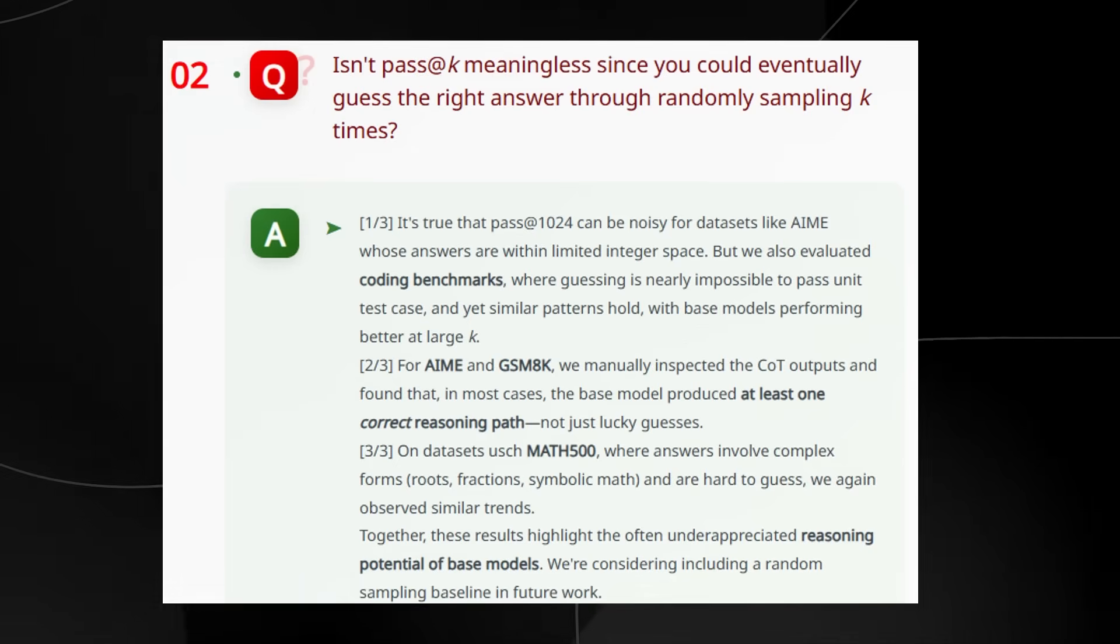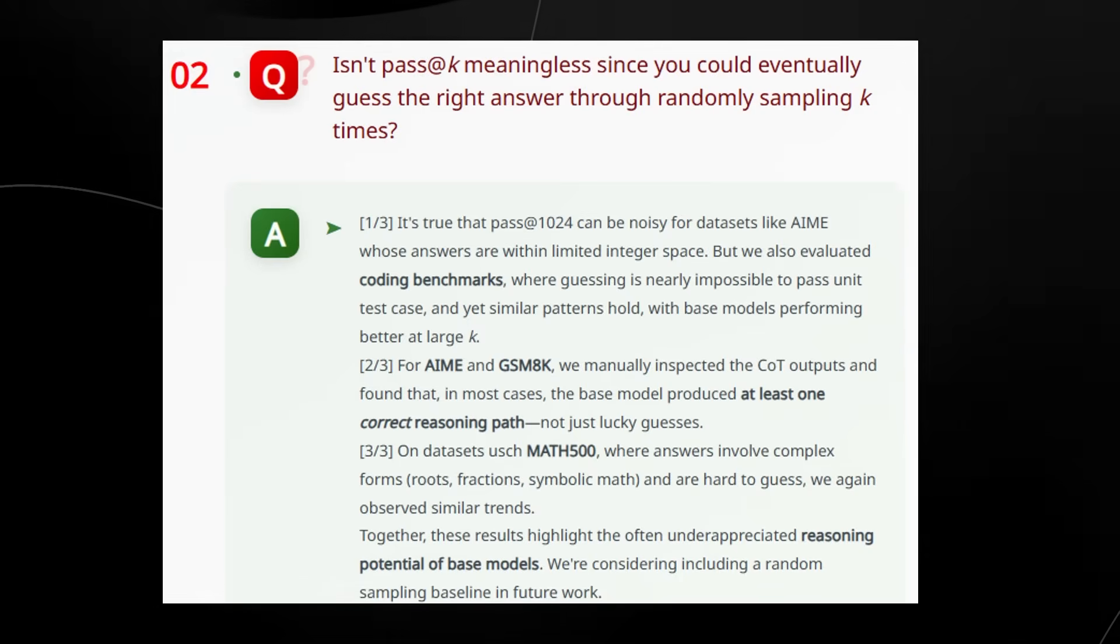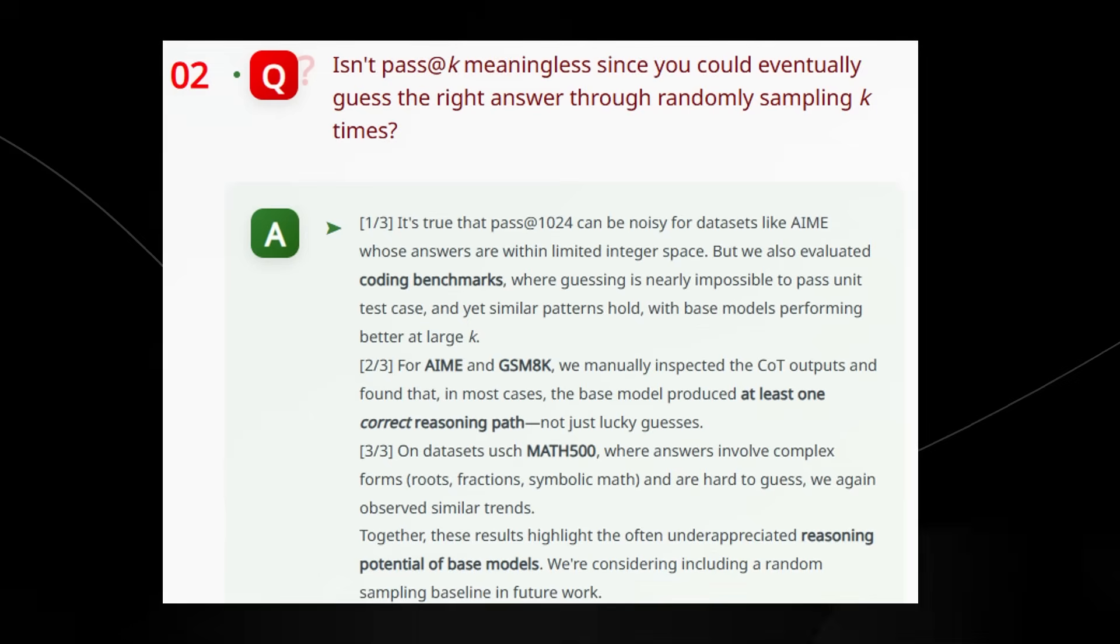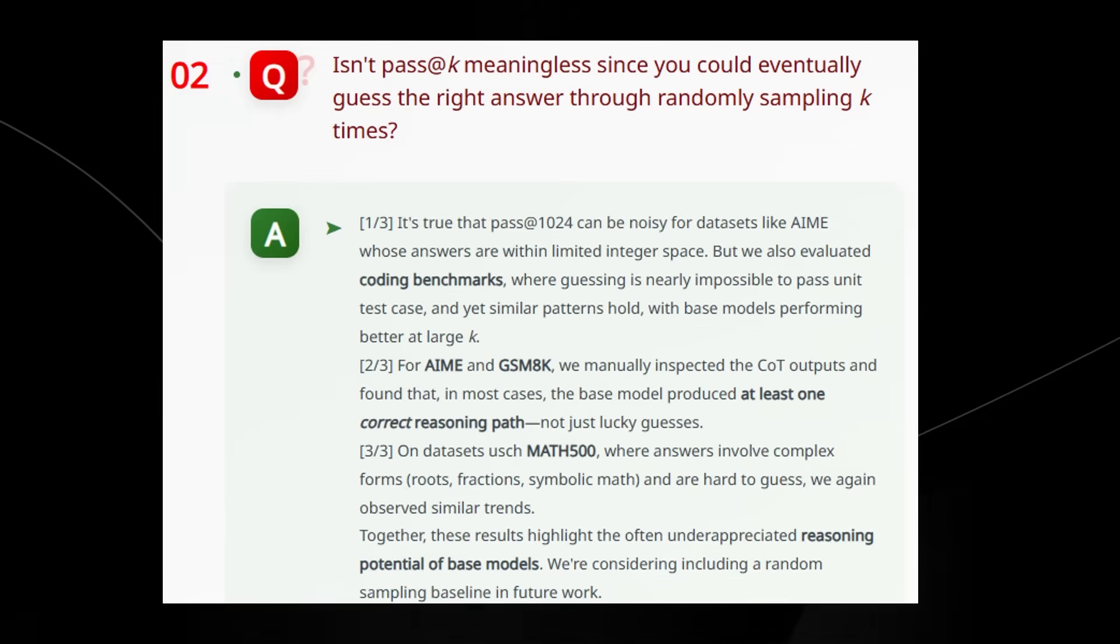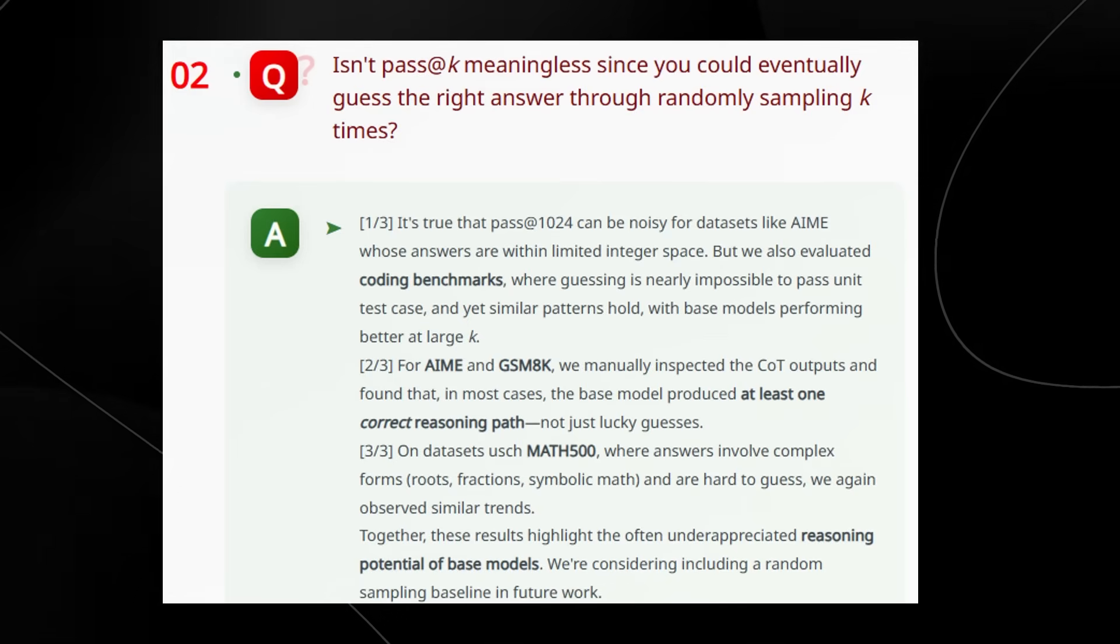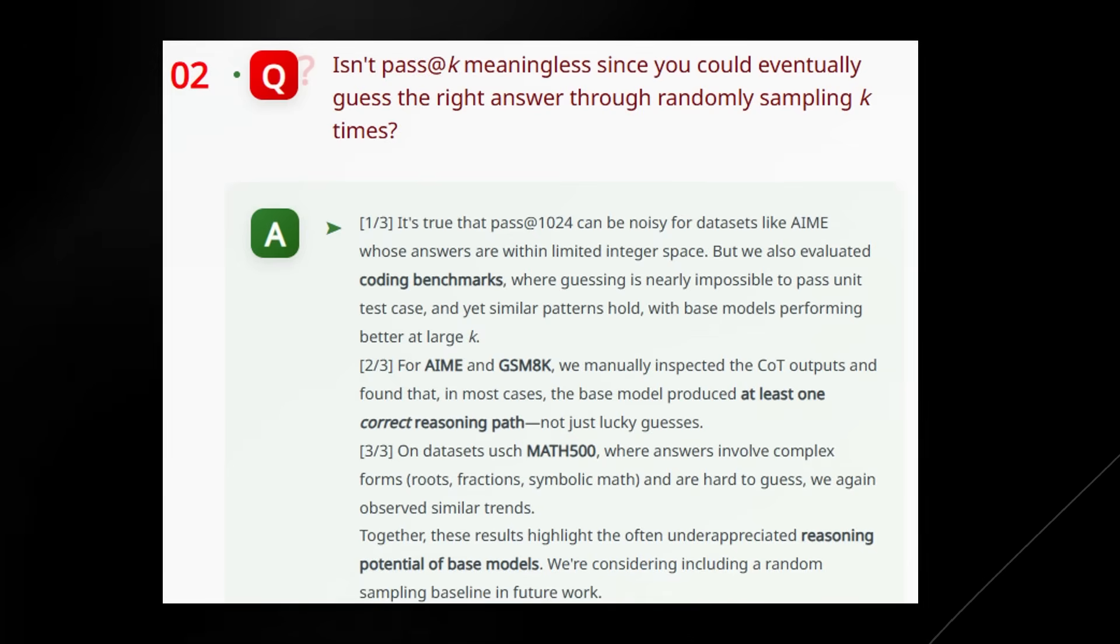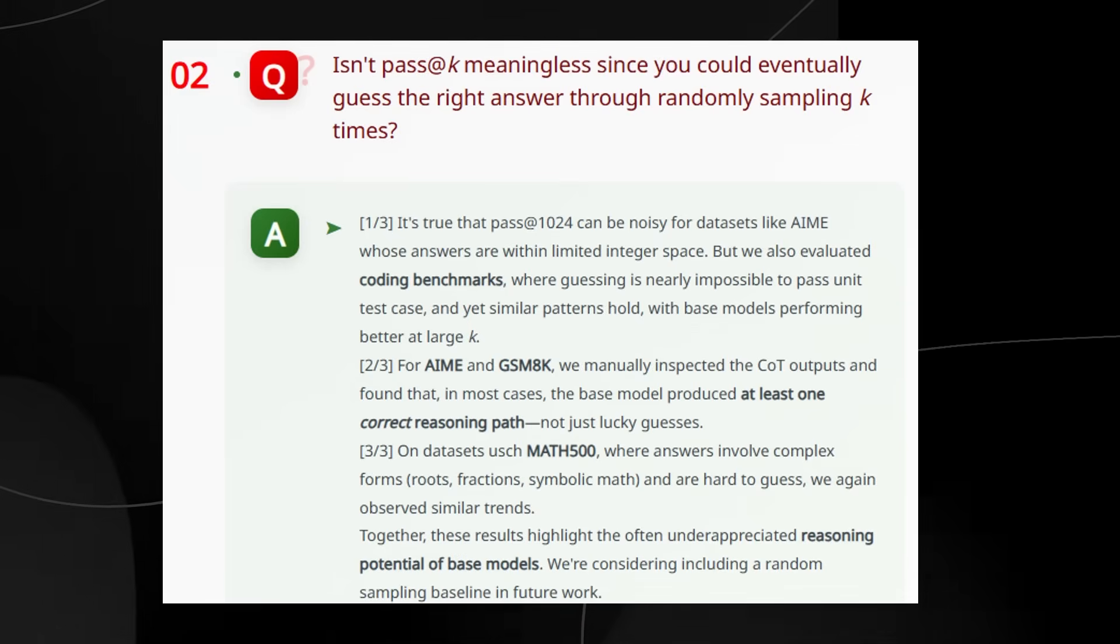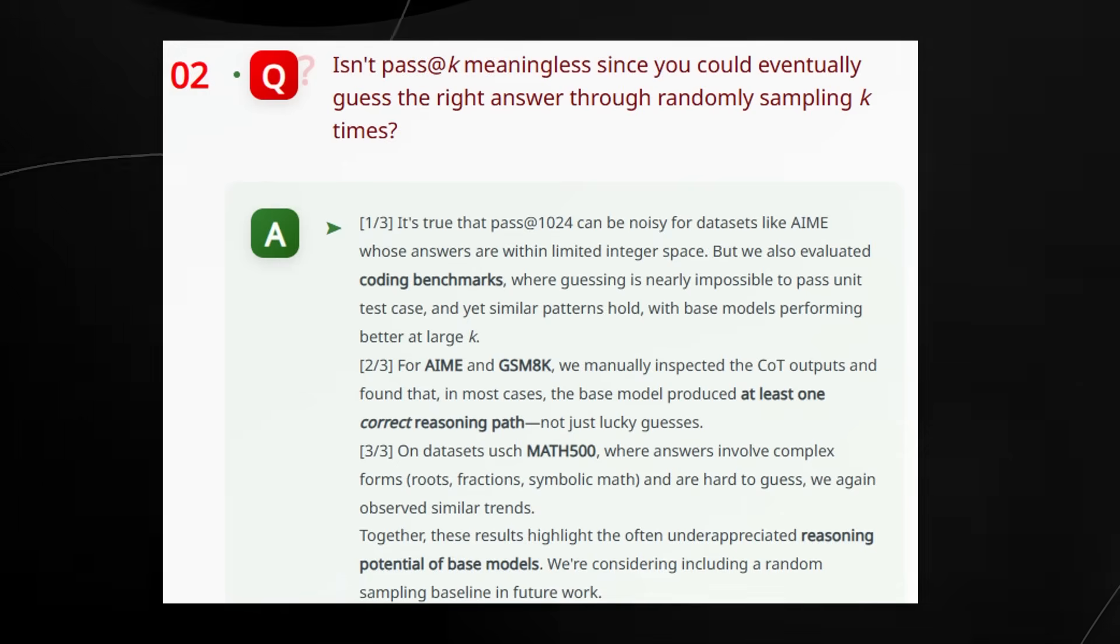Basically, if you gave it a thousand tries, eventually it might get the right answer. But for coding problems, you can't just guess and get it right—it has to pass all the test cases, and that is hard to guess. And still, the base model often did better than the reinforcement learning trained model when given more tries. So that's not luck, that's real reasoning inside the base model. And they even checked this by hand. They looked at some problems from the AME and the GSM 8K and found that the base model's answers weren't just lucky guesses. They showed at least one step-by-step solution, even on hard problems like MATH 500, where the answers were things like fractions or square roots—things that are super hard to guess. The base model still did better when allowed to have more tries.